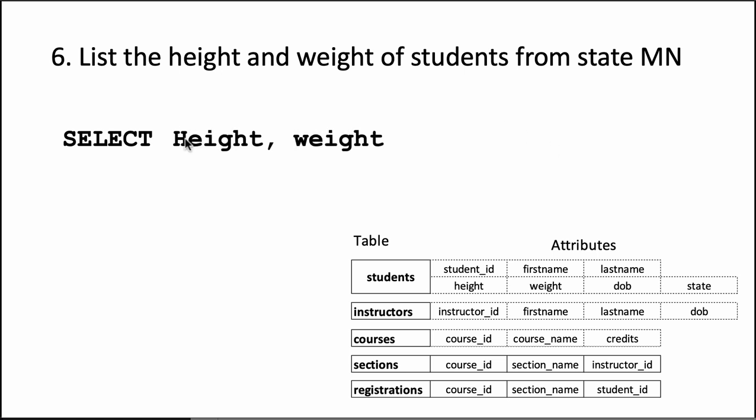It doesn't matter, SQL is not case sensitive so it's okay. We say select height and weight because those are the only two columns we want, and we know that it's from the table students. This time we do have a WHERE clause because we don't want the details for all the students, we only want the details for students who are from the state of Minnesota.